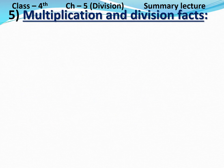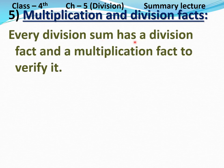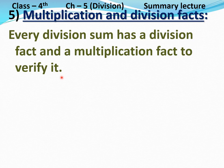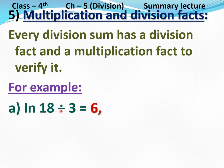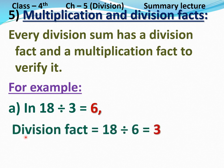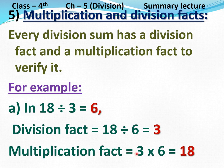Property number 5: Multiplication and division facts. Every division sum has a division fact and a multiplication fact to verify it. For example, part A: in 18 divided by 3 equals 6, 18 is the dividend, 3 is the divisor, and 6 is the quotient. Division fact: 18 divided by 6 equals 3 — we divide the dividend by the quotient. Multiplication fact: 3 multiplied by 6 equals 18 — we multiply the divisor and quotient. Thus this division sum has a division fact and a multiplication fact to verify it.